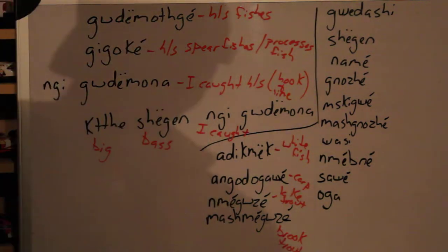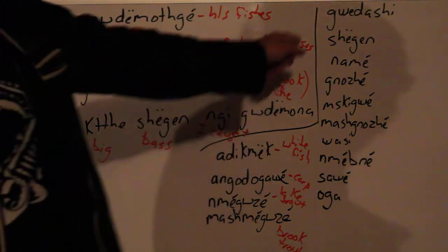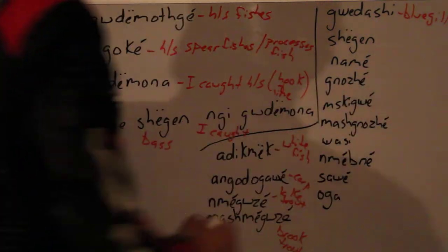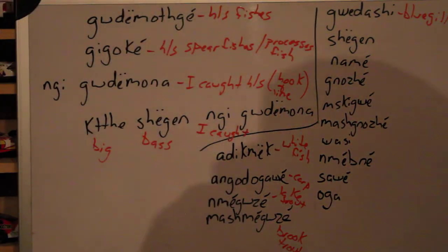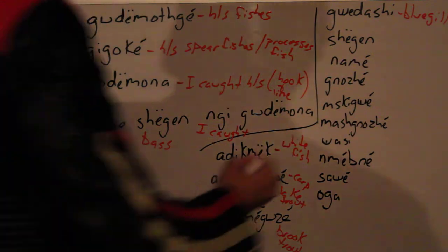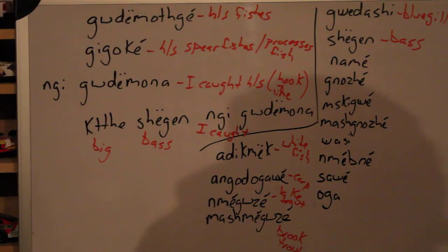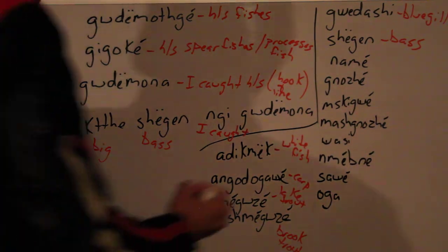Over here we have goudashi. Goudashi is your bluegill. Below that we have shagun — shagun is a bass. Below that we have namagwazé — namagwazé is a sturgeon.